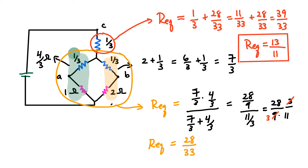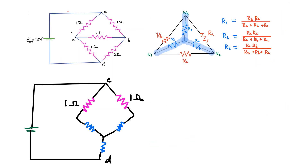That is one way we were able to solve this problem. There is another delta network you can actually use with the same transformation — let me spend a minute to highlight that. If I look at the original bridge network, in the previous case I took the top triangle. However, the bottom triangle is also a delta network — it's inverted, but I could still use those three resistors, which form a delta network.